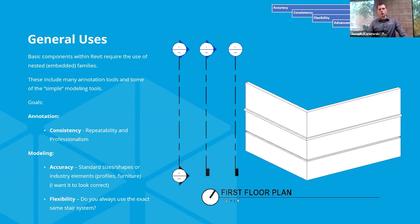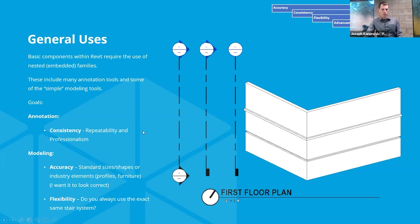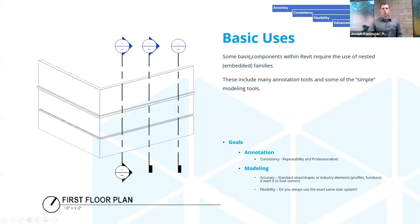The first general use for a nested family — embedded, nested, incepted, whatever you want to call it — it's just a family within a family. The basic use cases are the system families within Revit itself. Within Revit we have annotation families, shown here, that require nested families. For instance, the heads are nested. We also have basic modeling tools that allow and require nested families.